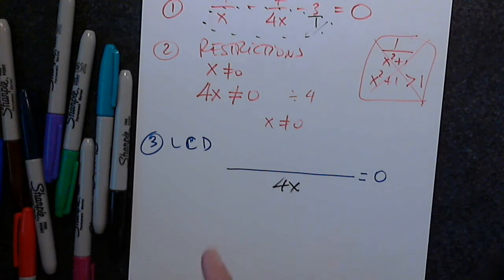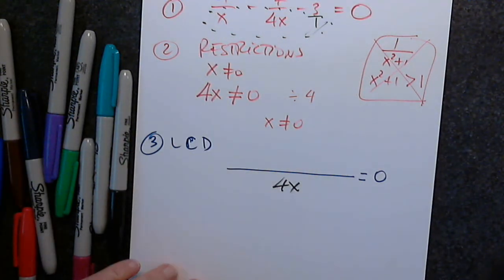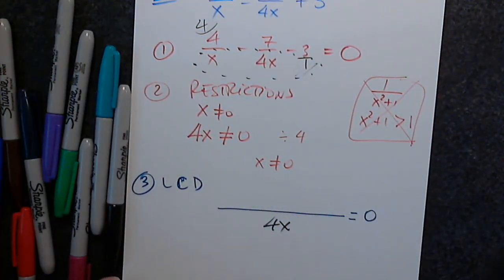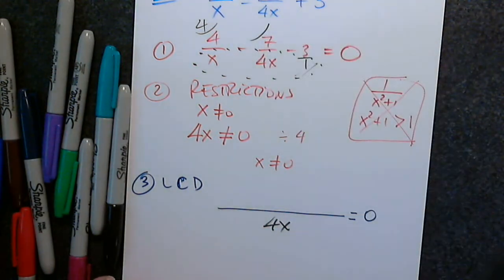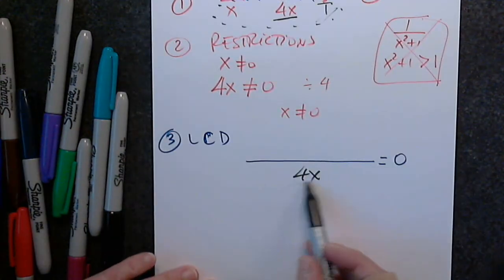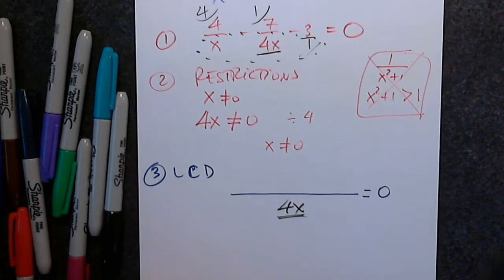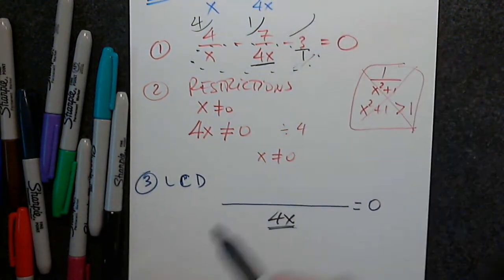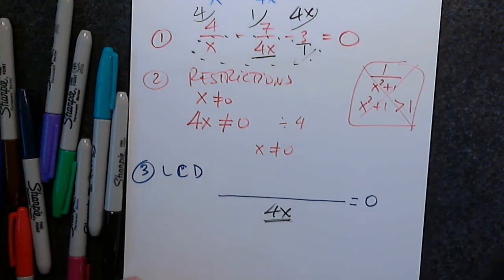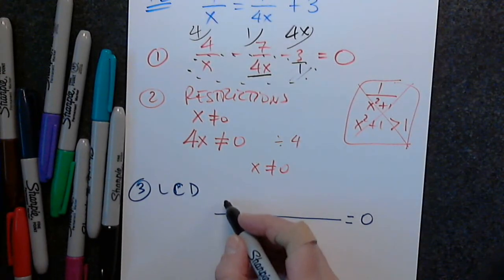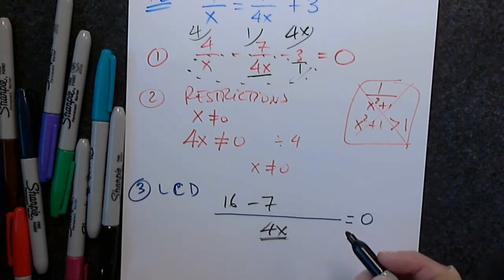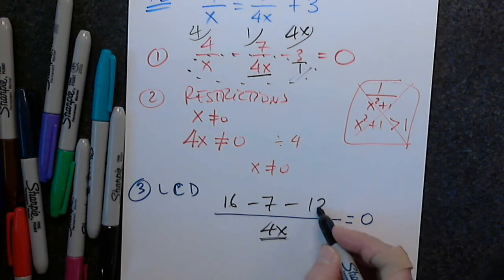What do I multiply the top of the first fraction by? Very good. What do I multiply the top of the second fraction by? 1 — very good, there is no change. If there is no change, I cannot multiply by anything. And what do you multiply the top of the third fraction by? Excellent. Can anyone give us the numerator? Awesome.